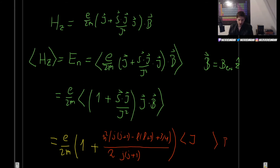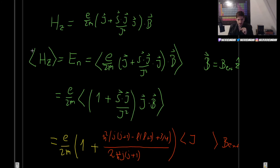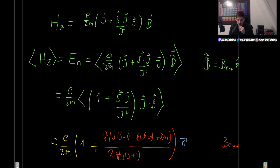The magnetic field B is simply a constant we can pull out. The expectation value of J — not J squared, be careful — is ℏ times m_J, the quantum number m_J.